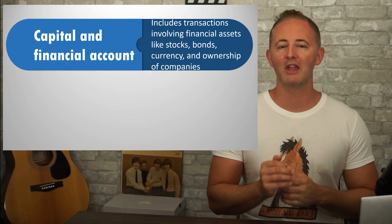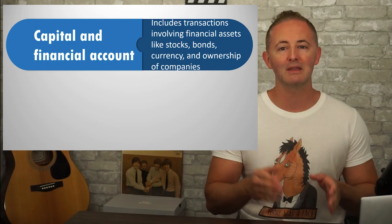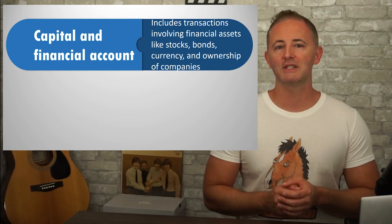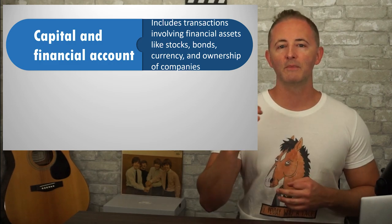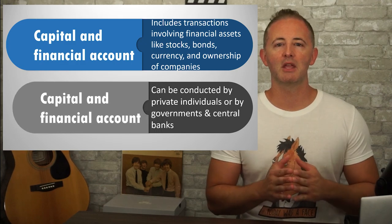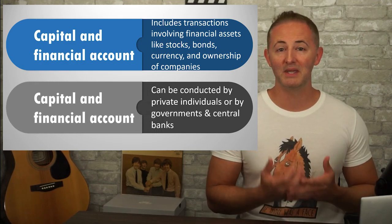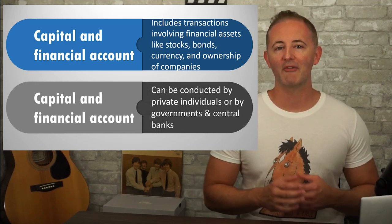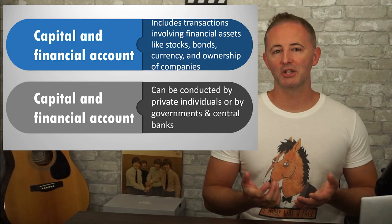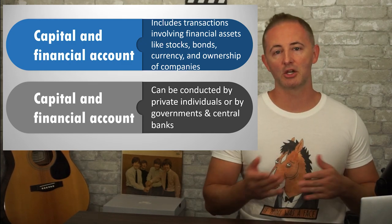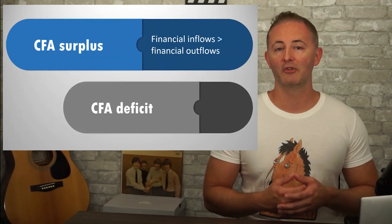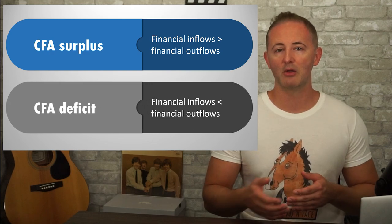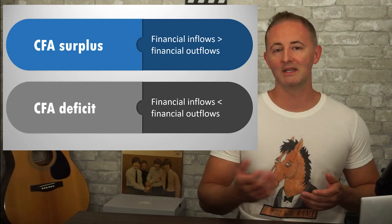Our second type of account is the capital and financial account, which is a record of international transactions that create a liability and includes transactions involving financial assets such as stocks, bonds, currency, and ownership of companies. These transactions can be conducted by private individuals and businesses, as well as on behalf of governments and central banks. The capital and financial account can also be balanced in surplus or deficit: when financial inflows are greater than outflows, it's in surplus, and when financial outflows are greater than inflows, it's in deficit.